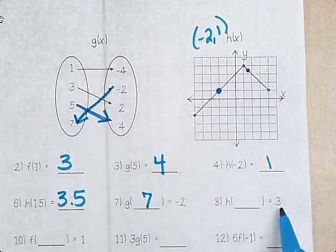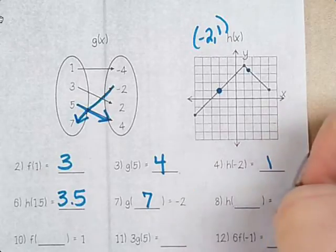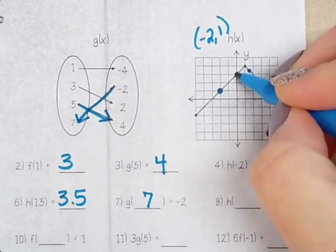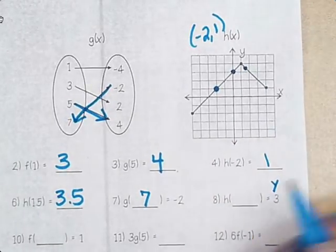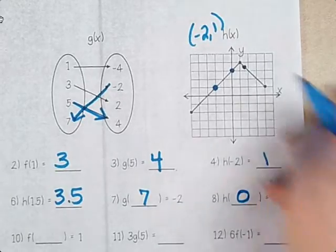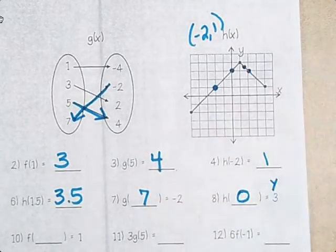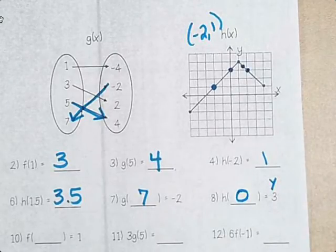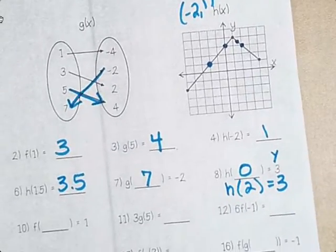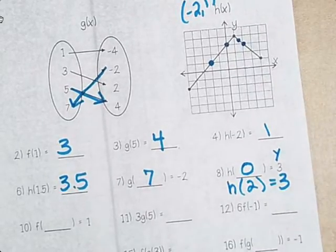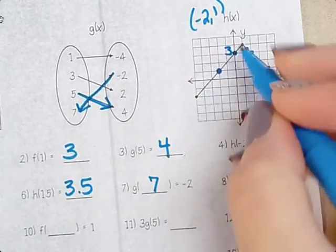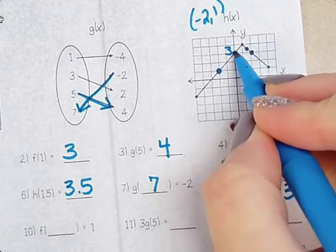Okay, h of something gives us 3. So I need to look at where y is 3. So go on the y axis, go to 3. What is x? What is it? It's 0. And is there another one? 2. There's actually two answers. So I'm going to put h(2) = 3. So there's actually two answers on that. Because y is 3 at this location and this location. So that's x is 0 and x is 2.